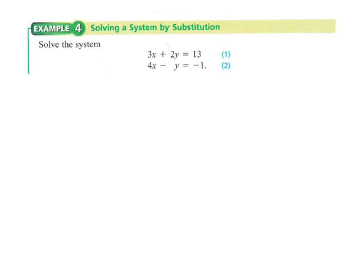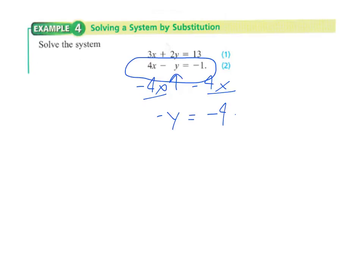Here's another example of a system we can solve using substitution. The difference here is we don't have one equation already solved for either x or y. However, the second equation is probably the best choice — notice it has just a minus y term, which will be easy to solve for. If I subtract 4x from both sides I get negative y equals negative 4x minus 1, then dividing by negative 1 gives y equals 4x plus 1.